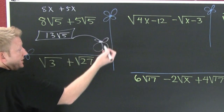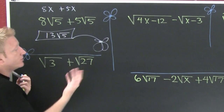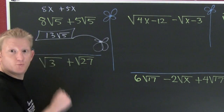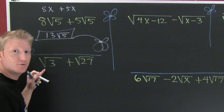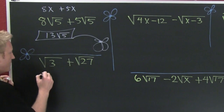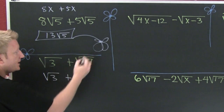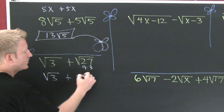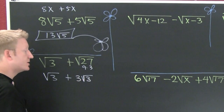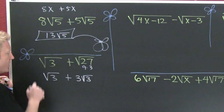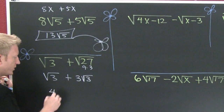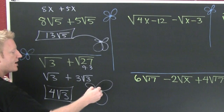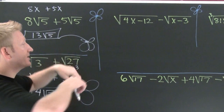Now down here it doesn't appear we have like radicals, but we can work a little harder and simplify. This is the square root of three plus the square root of 27. I can see 27 as nine times three, and the square root of nine is three, so that becomes three roots of three. When I simplify those roots, now I do have like radicals: one plus three more gives me four roots of three.